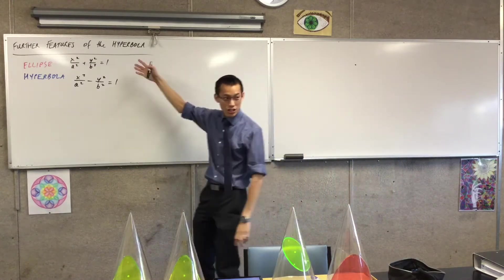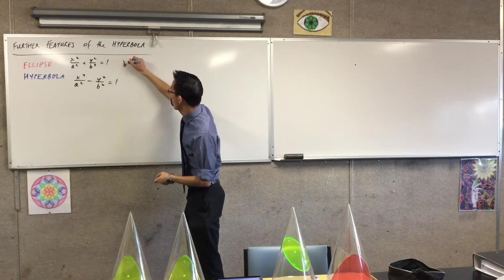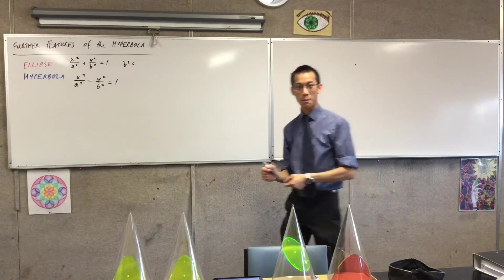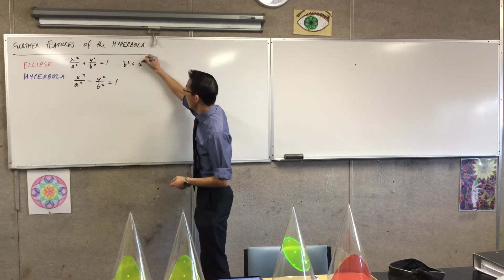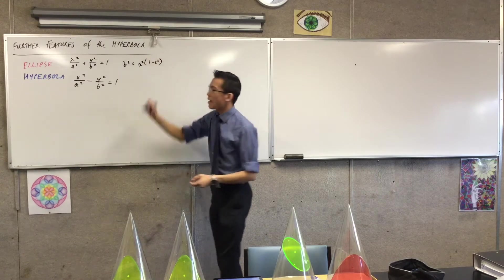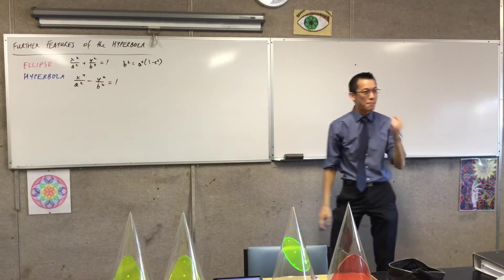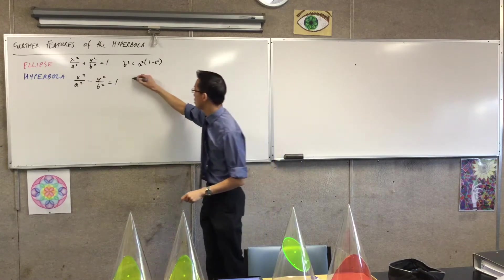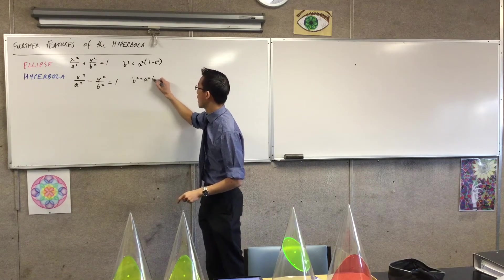So the relationship is b squared equals—now for an ellipse what's b squared equal to? a squared times one minus e squared. Very good. And for a hyperbola? Good morning. For a hyperbola it is reversed for the one minus e squared, right? So it's still b squared and a squared.